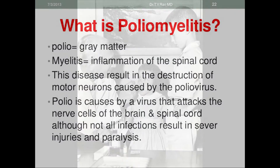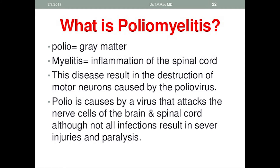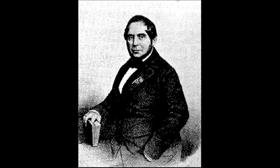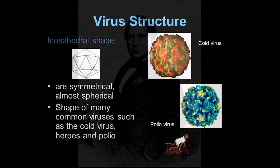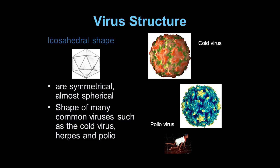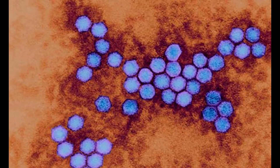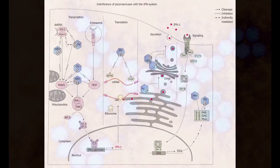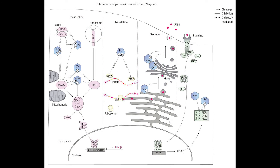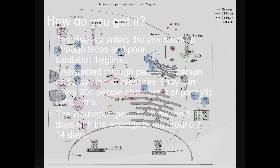What is the poliovirus? The first clinical description of polio was provided by British physician Michael Underwood, who referred to polio as 'the debility of the lower extremes.' Poliomyelitis, or polio, is a highly infectious disease caused by the poliovirus. The poliovirus is dangerous as it can sneak past the immune system so easily and targets one of the most important systems of your body — the nervous system.